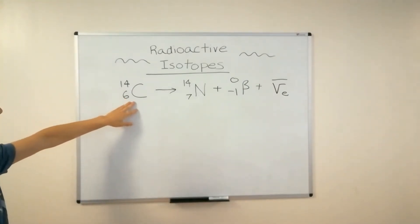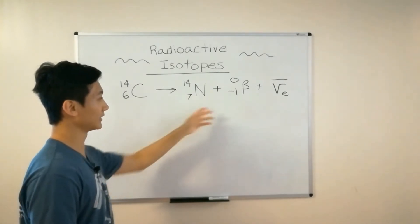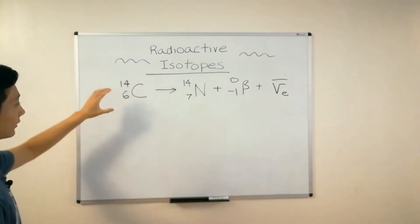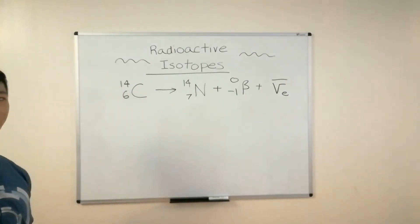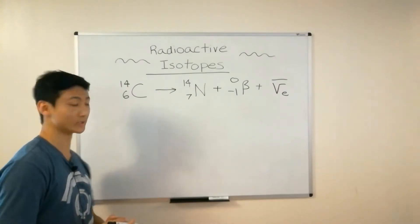So we see that this carbon-14 is decaying into nitrogen and releasing an electron as a result. So what is the purpose of this? Well, let me first introduce to you guys the concept of a half-life.